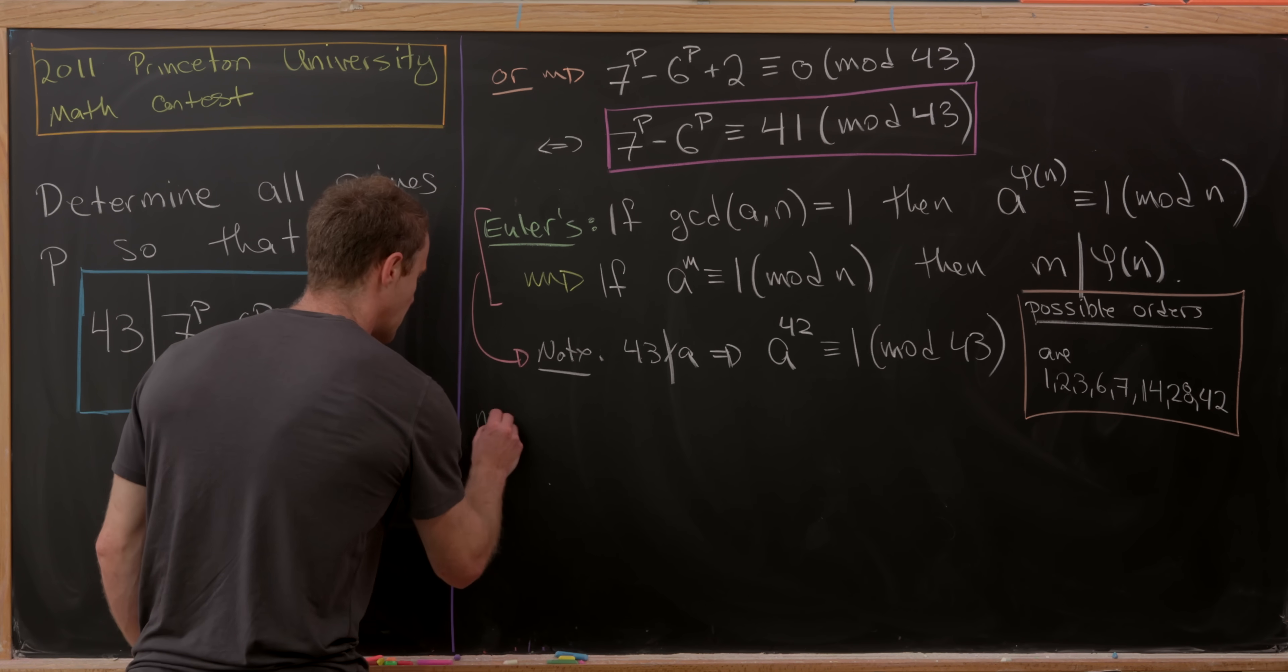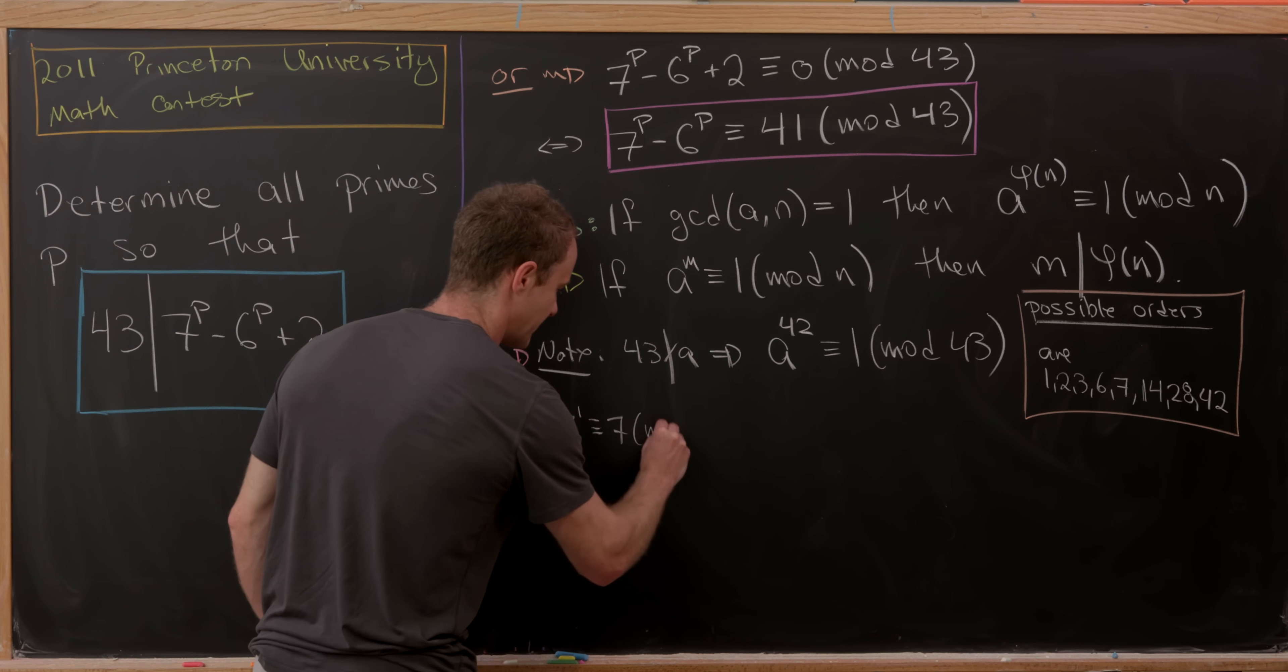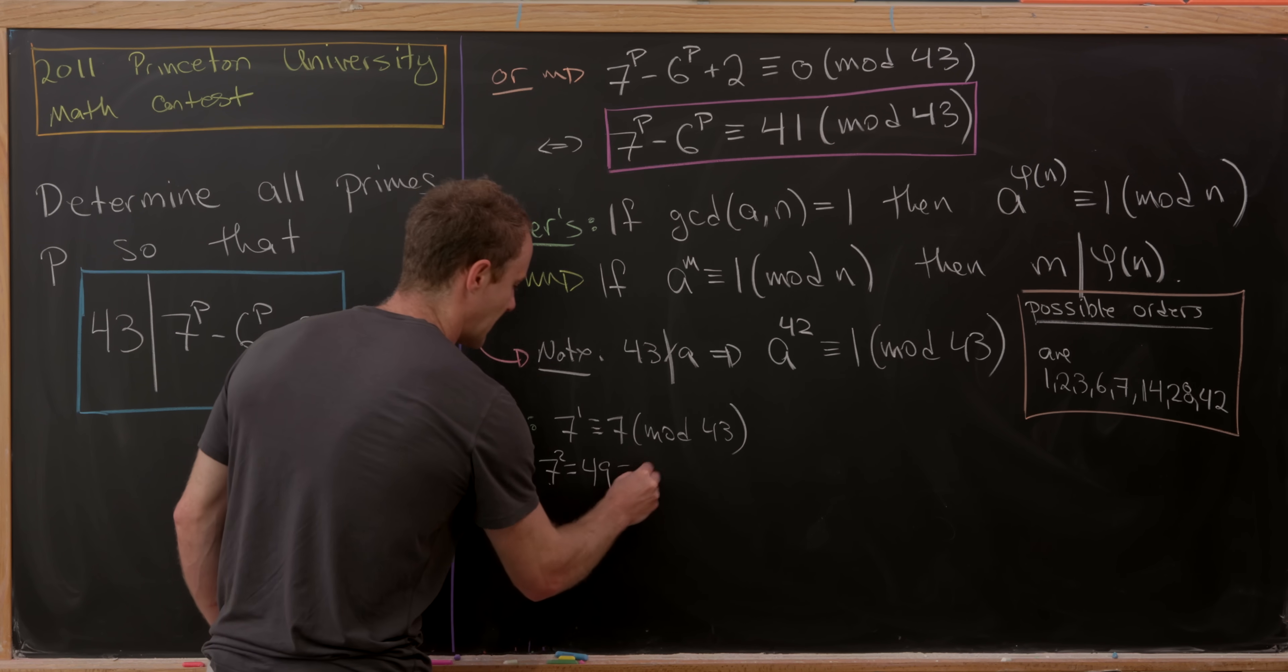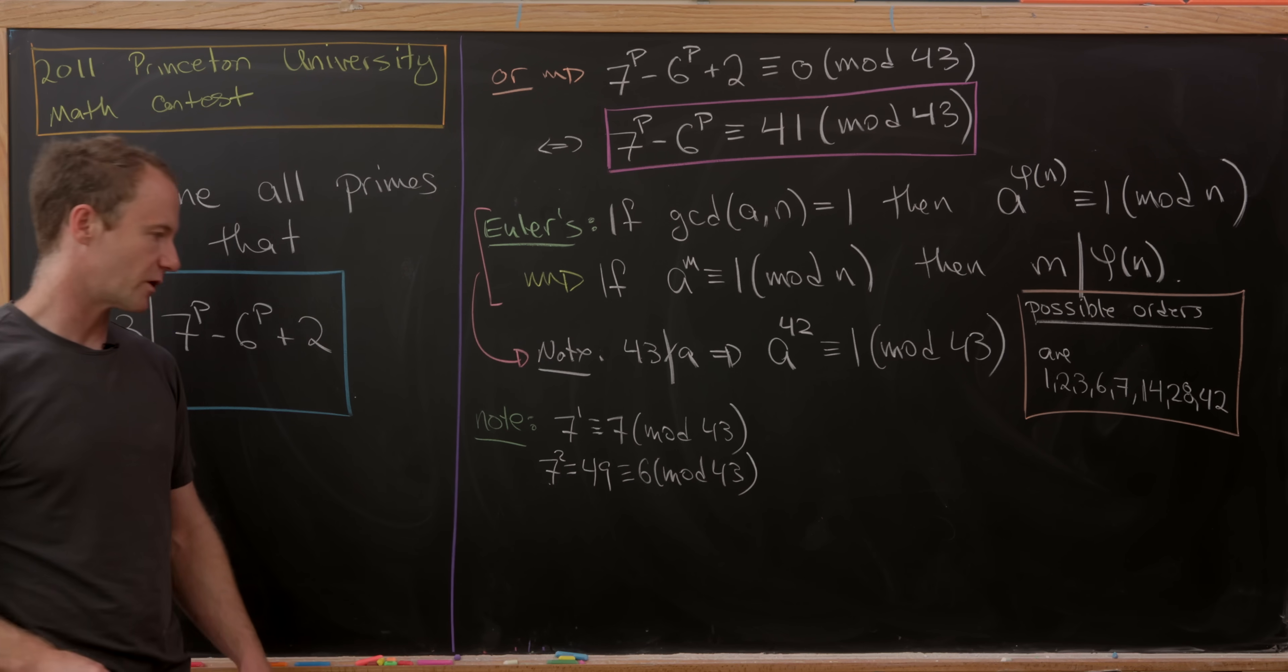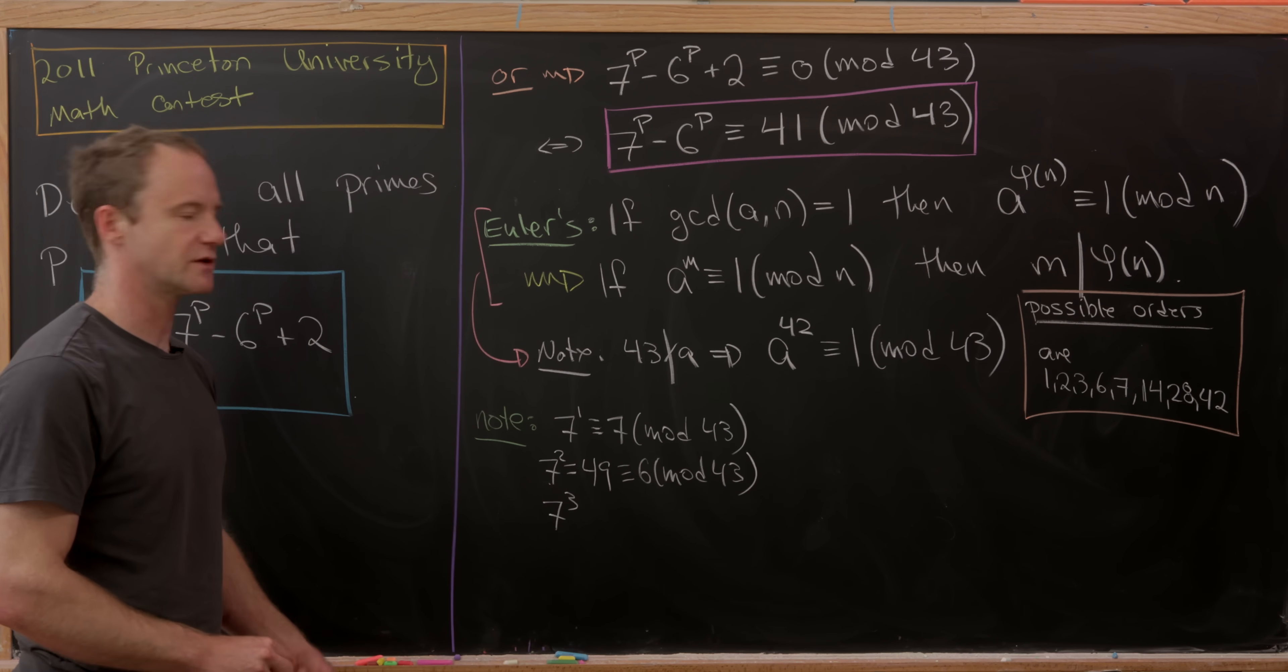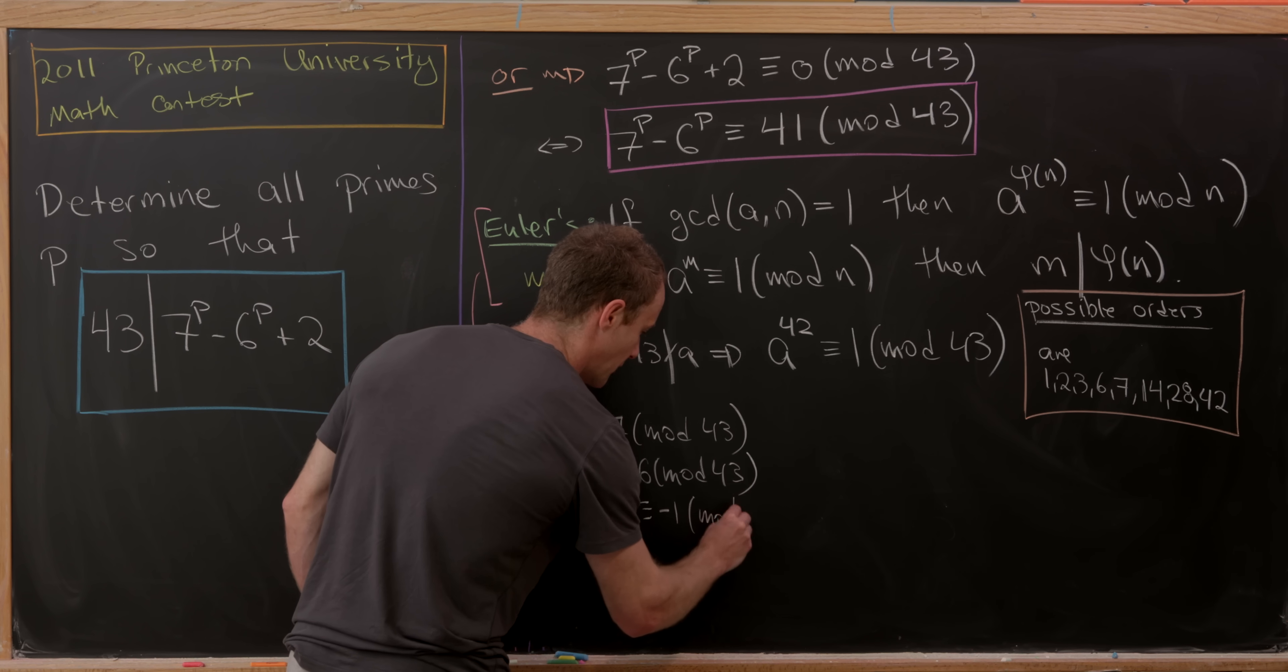Let's make the following calculations. Let's start with determining the order of 7. Notice that 7^1 is congruent to 7 mod 43. 7^2 is equal to 49, which is congruent to 6 modulo 43 because it's 6 more than 43. Then 7^3, we don't need to do 7 times 49 because we're reducing mod 43, so we'll just do 7 times 6. This is congruent to 42, which is in turn congruent to -1 modulo 43.